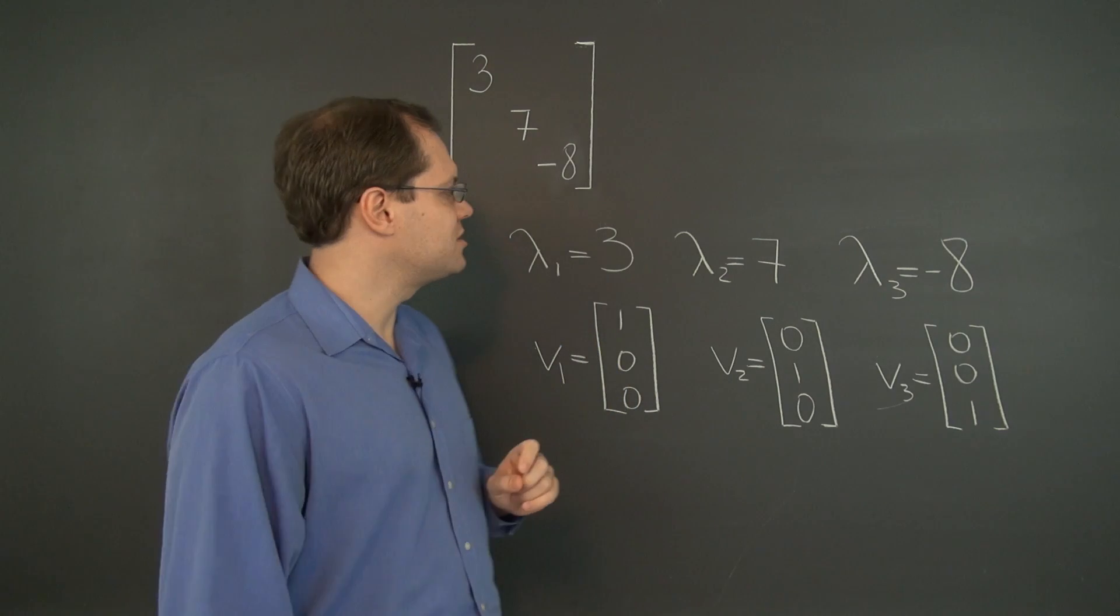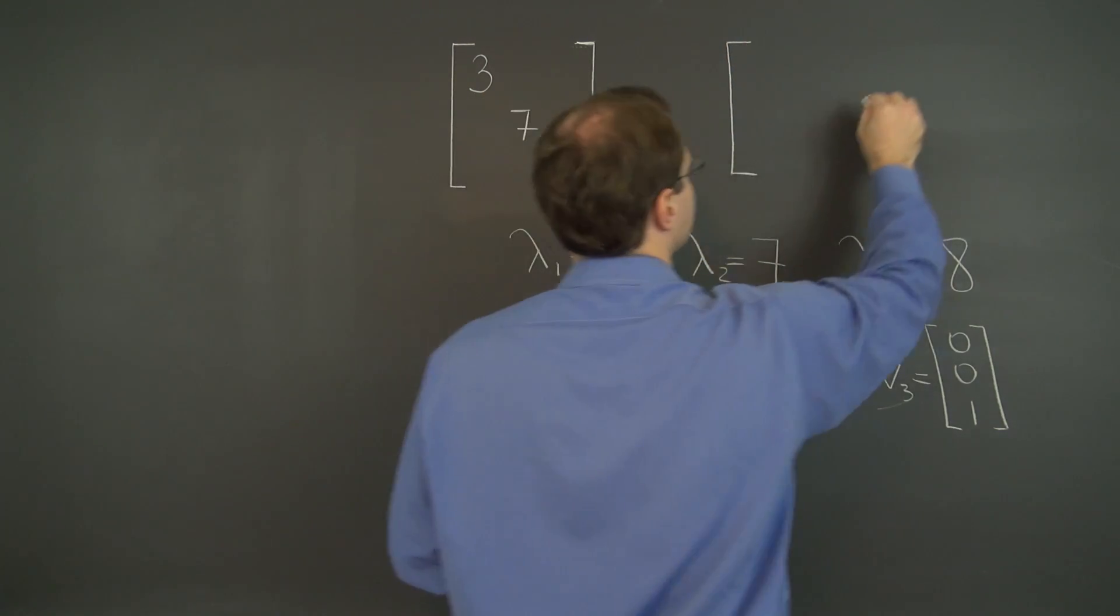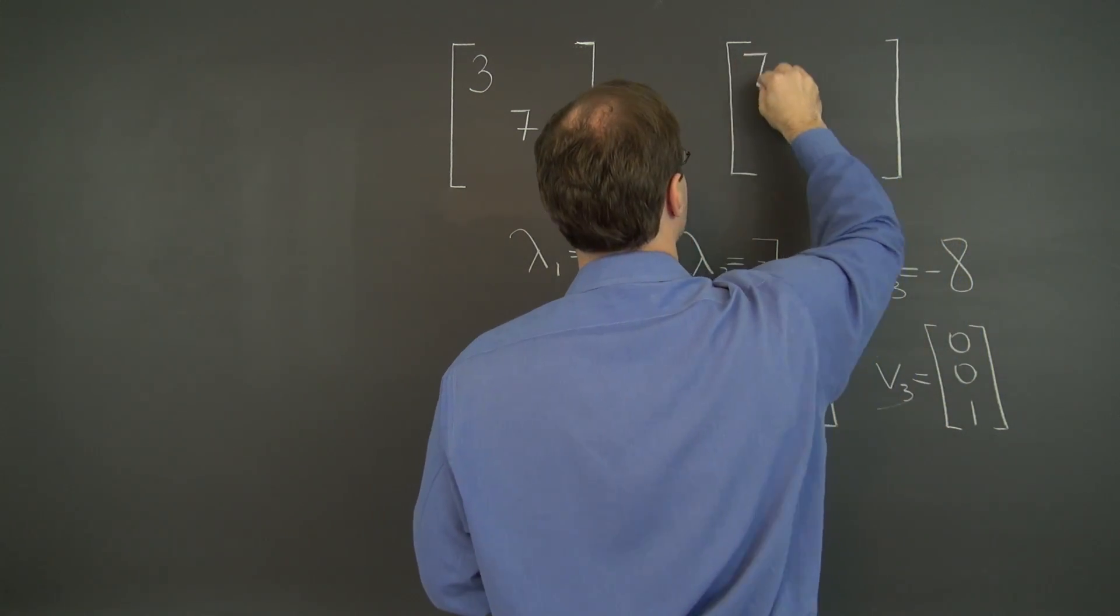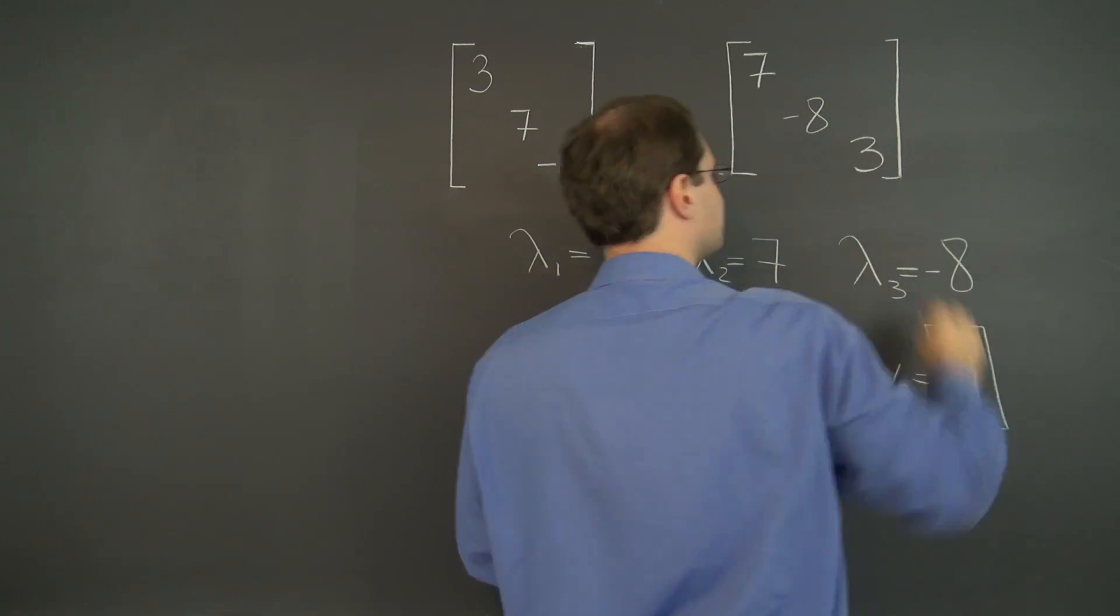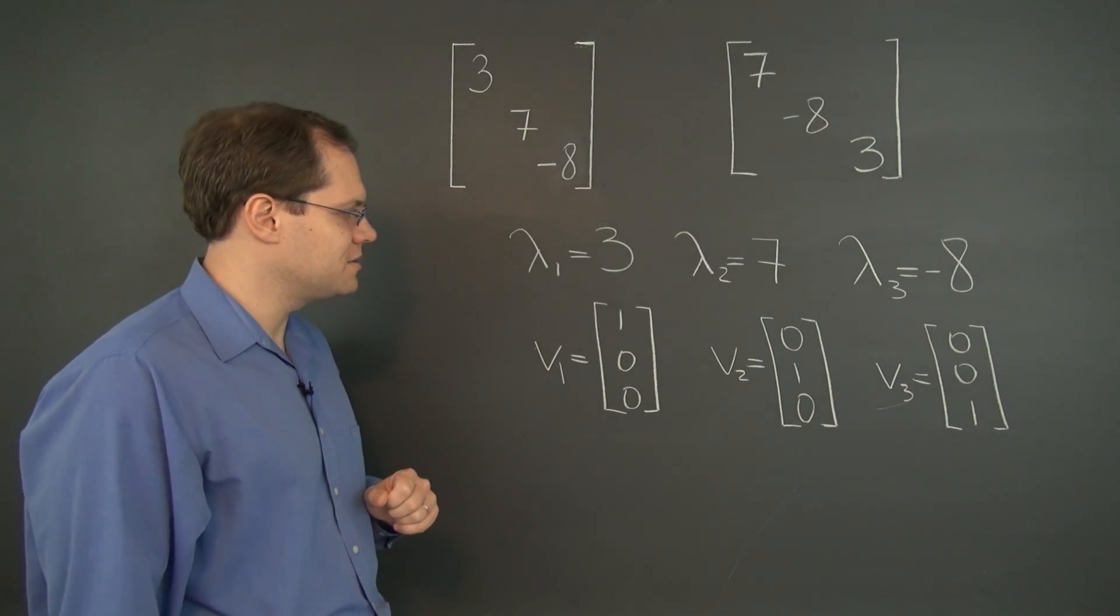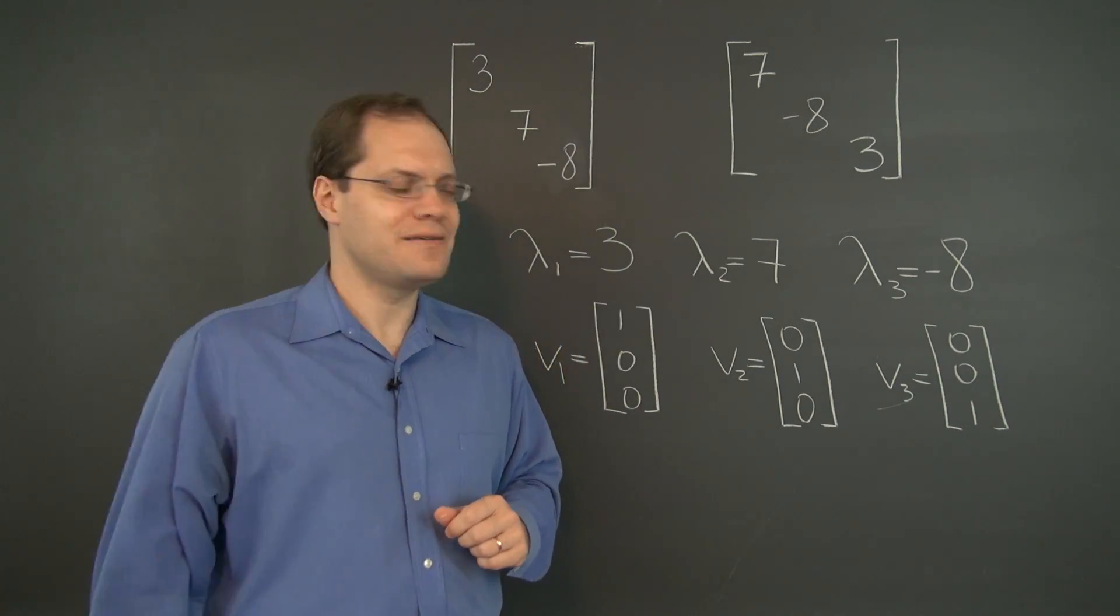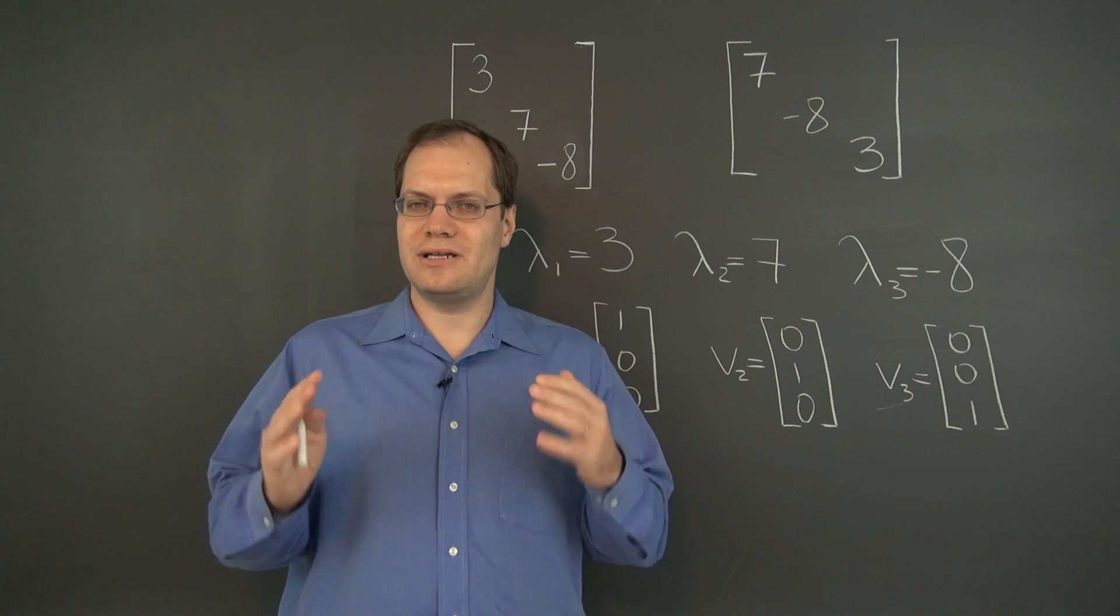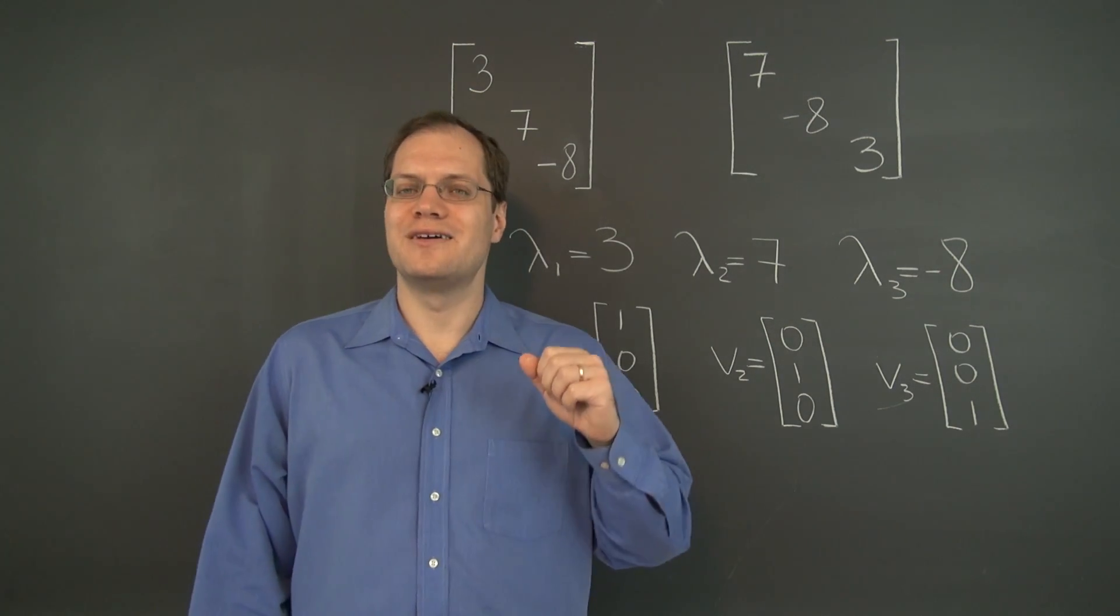Now let me ask you an interesting question. Would you say that this diagonal matrix, same numbers in different order, 7, minus 8, 3, have the same eigenvalues and eigenvectors? Think about it for a moment. And I'll bet you 9 out of 10 said yes. And I'm not going to claim that yes is the wrong answer. I just think that no is a better answer.